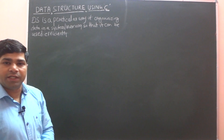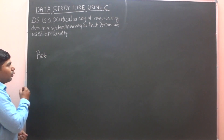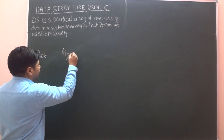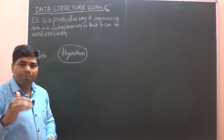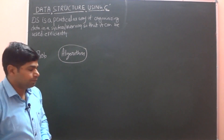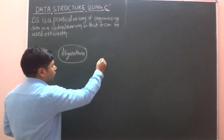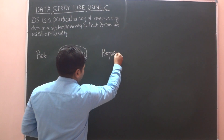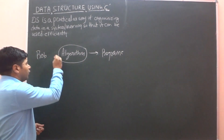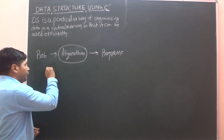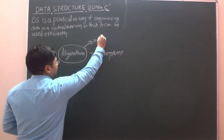Why we study data structure? Suppose you have some problem. For that problem you have an algorithm. What is an algorithm? Step-by-step instructions is called algorithm. Implementation of an algorithm using some programming language is called a program. In this algorithm, we give input, some task is performed, and corresponding to that you get output.